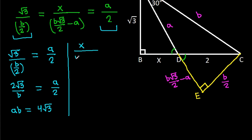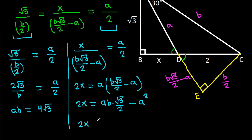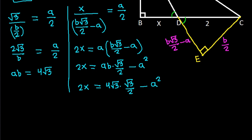From the ratio BD over ED equals AD over CD: x over (B√3/2 minus A) equals A over 2. Cross-multiplying gives 2x equals A times (B√3/2 minus A). Substituting AB equals 4 root 3, so B root 3 over 2 equals 2: 2x equals 2 times 3 over 2 minus A squared, simplifying to 2x equals 6 minus A squared.